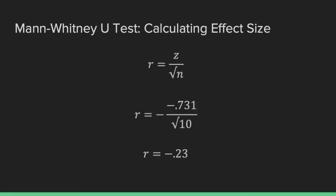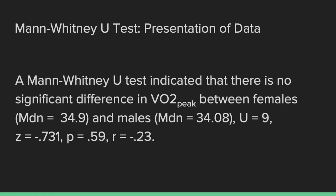We can calculate effect size using the z-score from the SPSS output, where n is the sample size. Plugging in both values gives an absolute effect size of 0.23. Here's an example of how you would go about reporting that information.